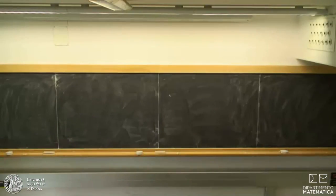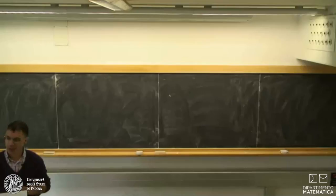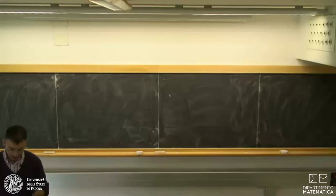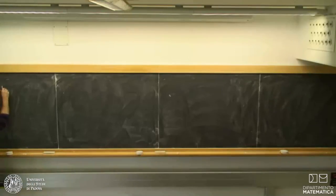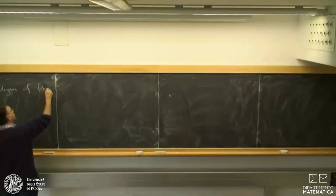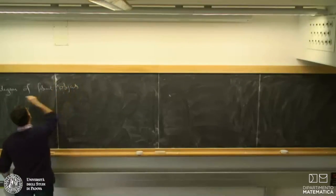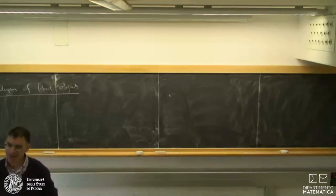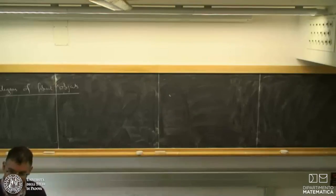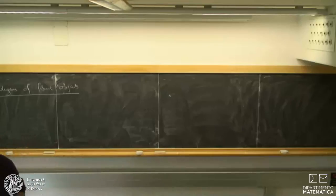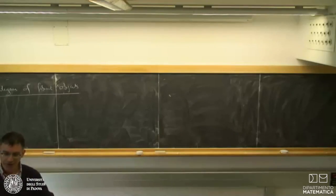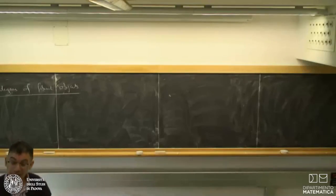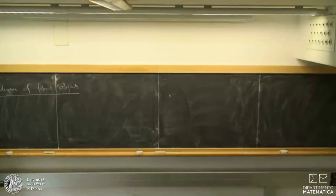Everything will be in the context of these things called categories of fibrant objects, which were introduced long ago — as many of the techniques we use in the subject were — in algebraic K-theory. They were introduced by Ken Brown, and I'm a big fan of them now. An example of a category of fibrant objects is the fibrant objects in a closed model category, but the point is there are much smaller examples. Closed model categories have lots of limits and co-limits, so they're sort of vast spaces in which to work, but in differential geometry we work with manifolds, and manifolds don't have coproducts.